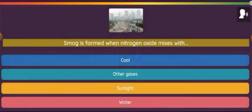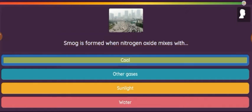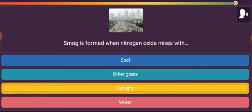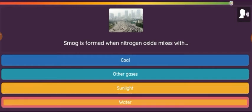Question: Smog is formed when nitrogen oxide mixes with. Option 1: Pools. Option 2: Other gases. Option 3: Sunlight. Option 4: Water.